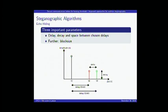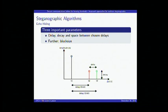Echo hiding has three important parameters: two delays — one for embedding a zero bit and one for a one bit. They need sufficient spacing so the receiver can distinguish between the two. Typical values: we used about one millisecond difference, and the delay shouldn't be too large because otherwise a listener would clearly hear the echo. We chose the delay to be less than 2.5 milliseconds.